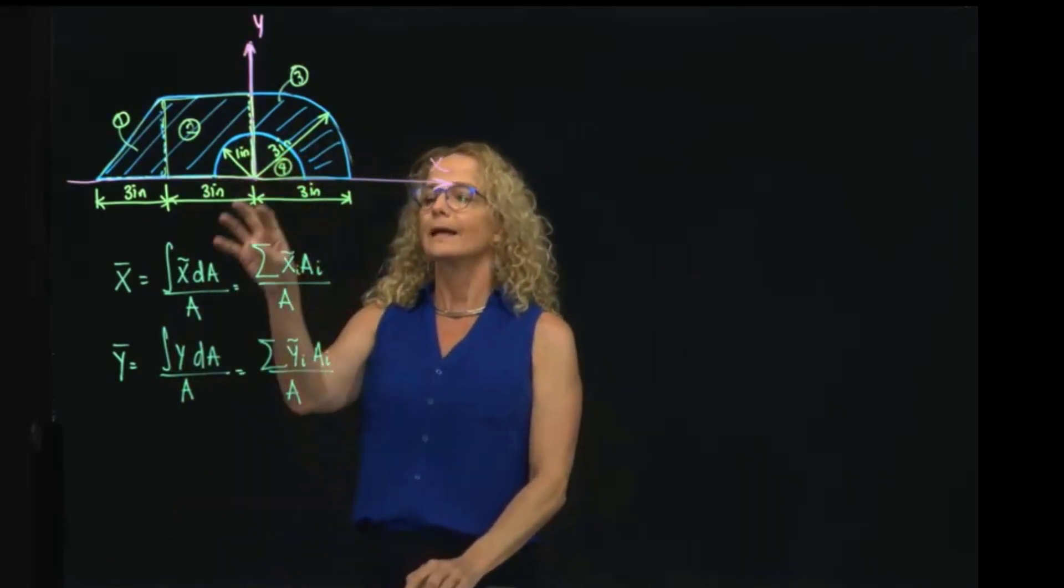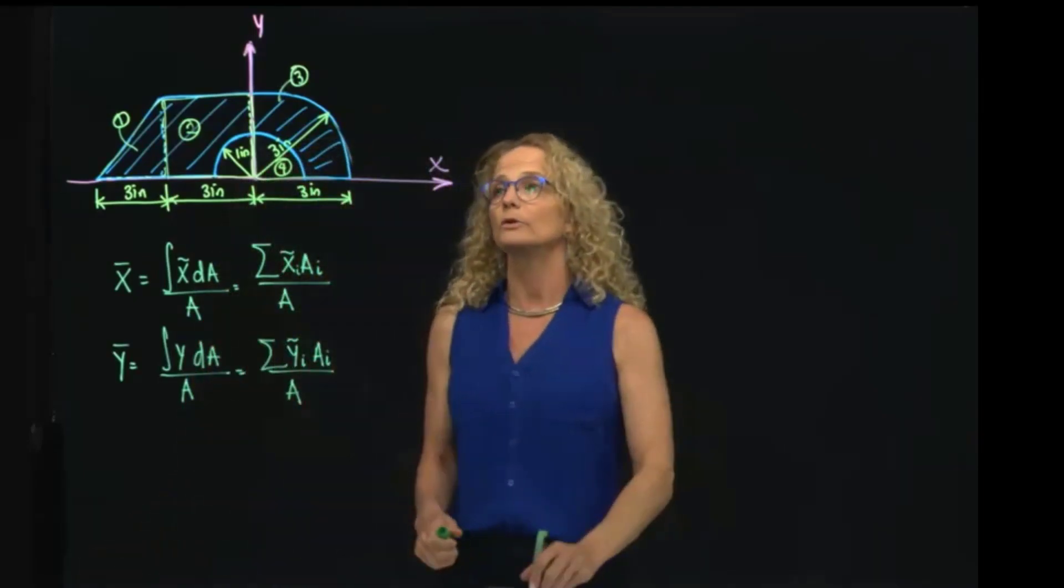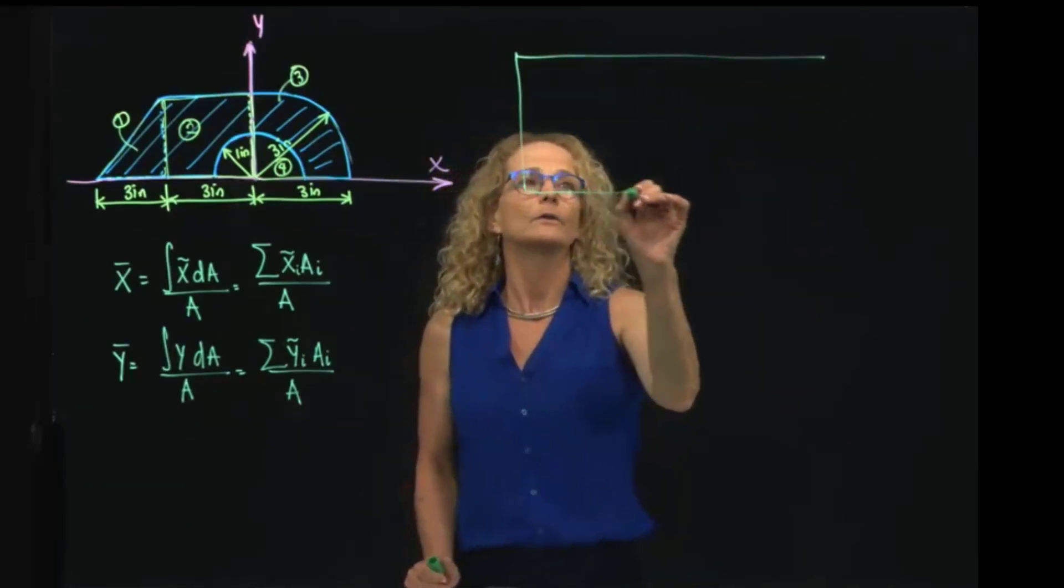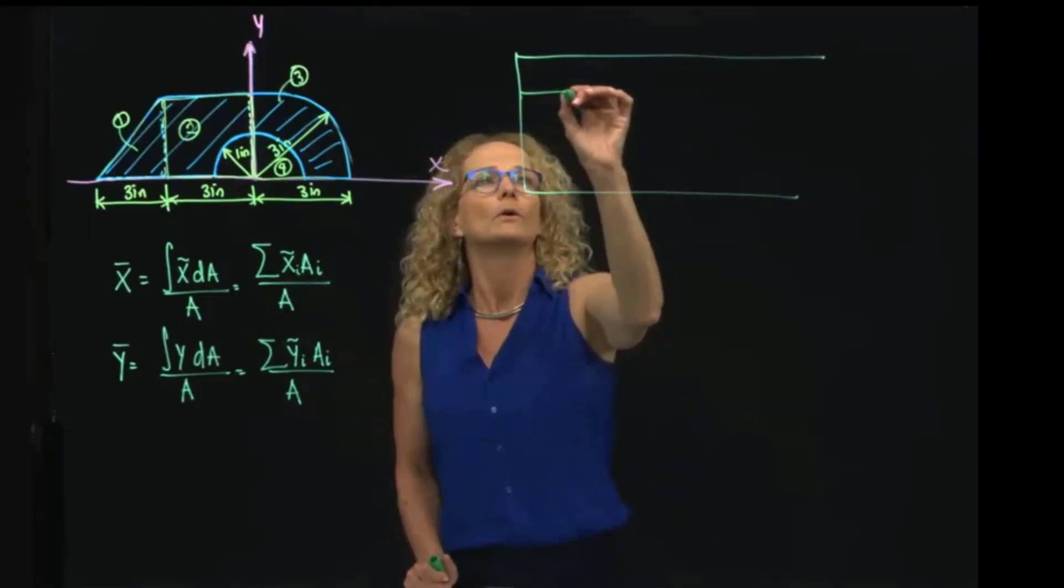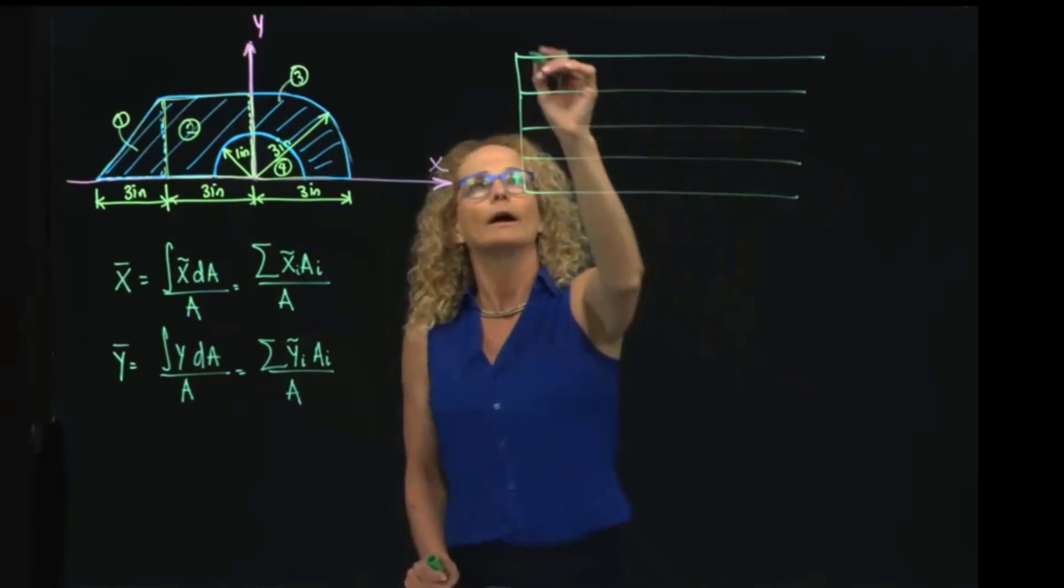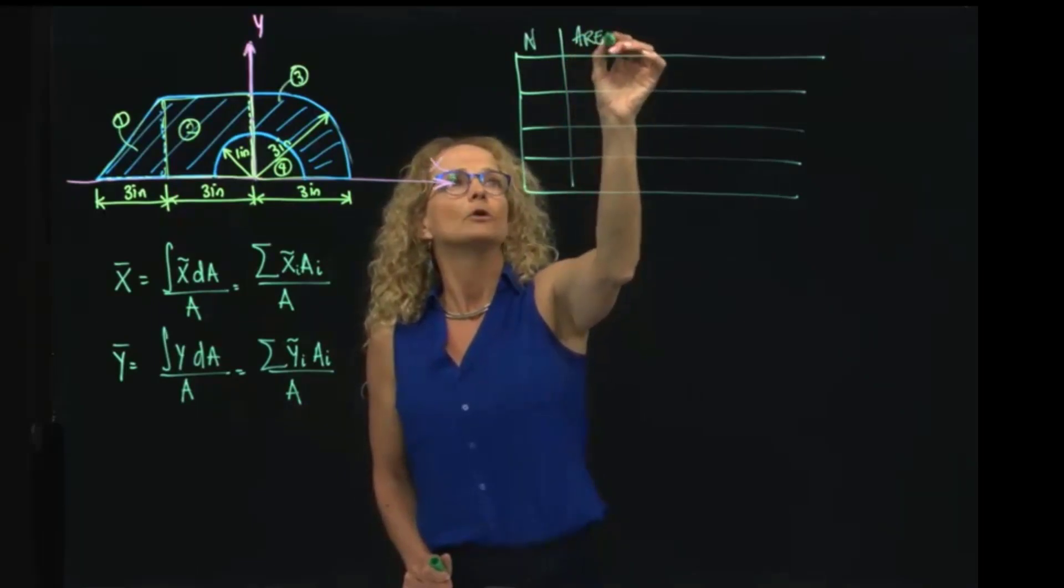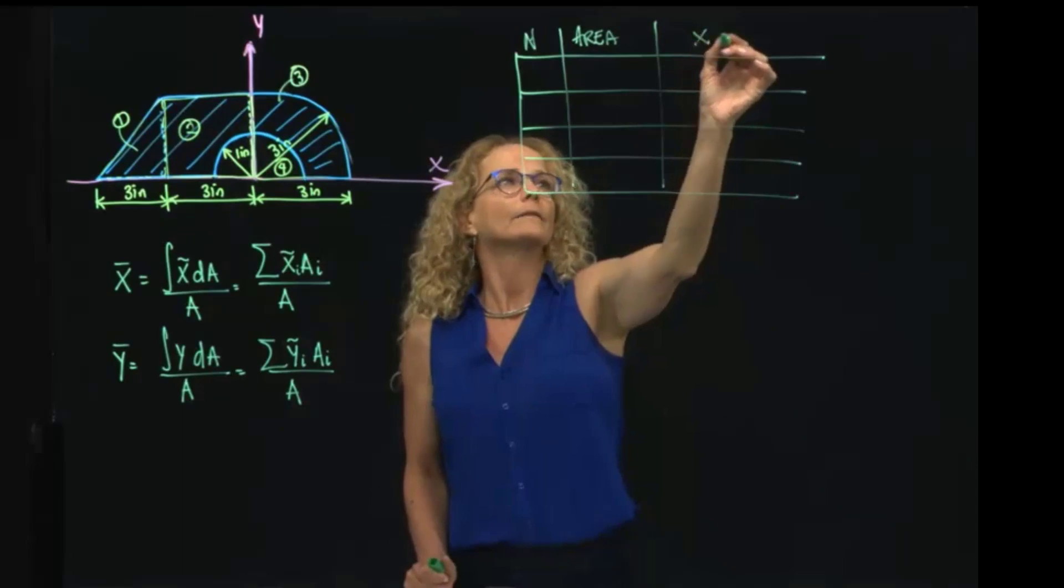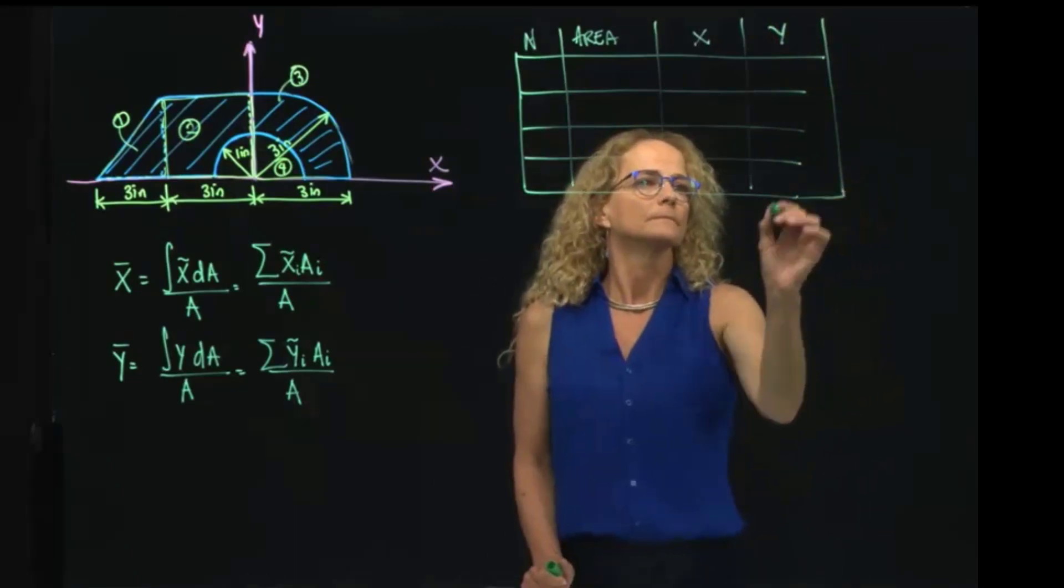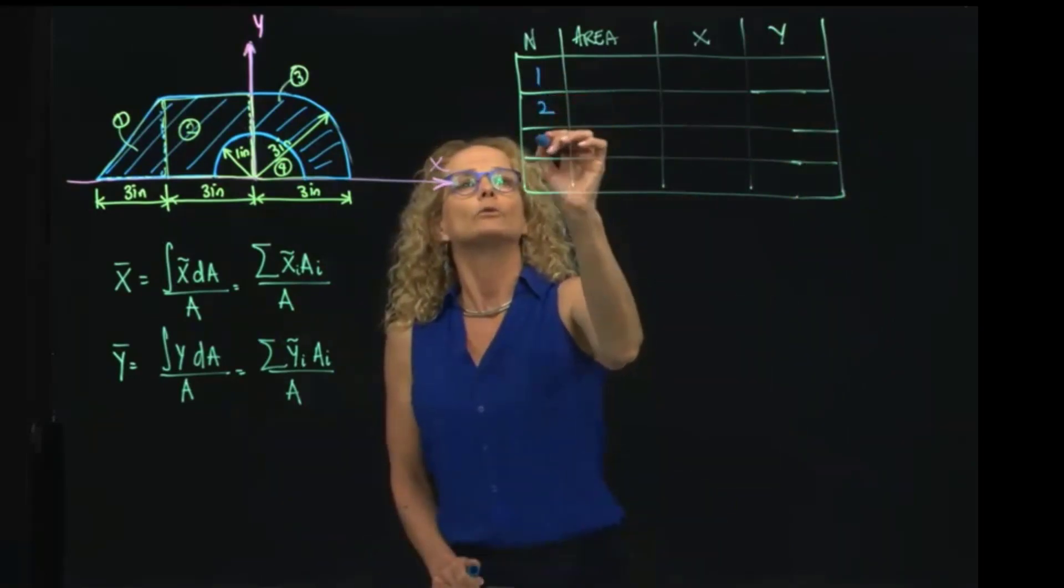So I have 4 sections, so this summation will be 4 figures. So what I will do is we'll do a table, and since I said we have 4 figures, I will divide this in 4: 1, 2, 3, and 4. And here I will say the number of my section, then I have the area of my section, and then I have where the x is located and where the y is located.